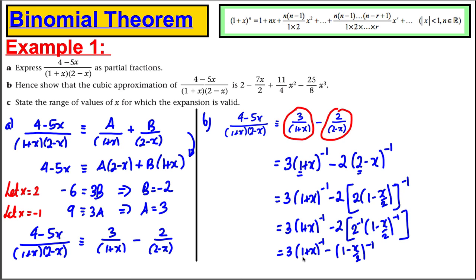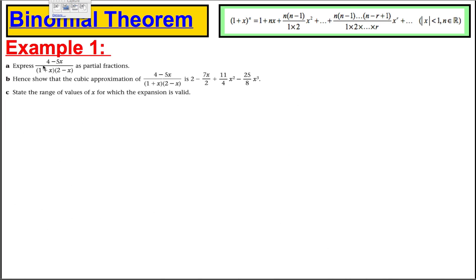So, what we can actually do now is we could expand this binomially times it by 3, expand this binomially, and subtract the two from each other. So, I am going to start my working off from this point here. Let's just take a quick picture of that so I can move it on to the next page. Right. So, let's proceed. Let's try and do this one.